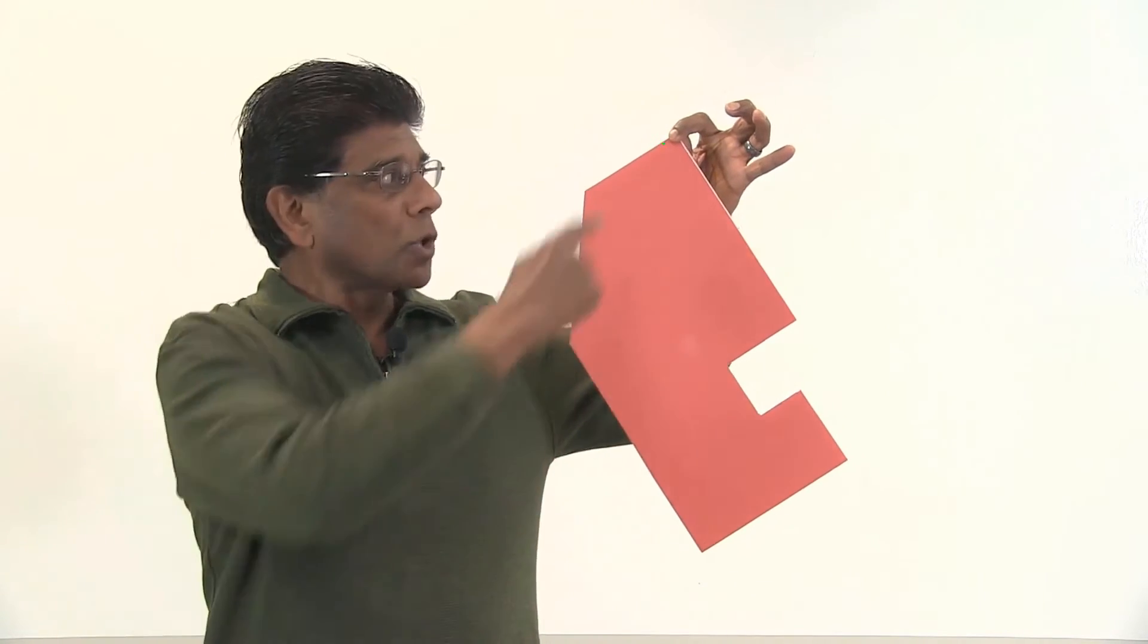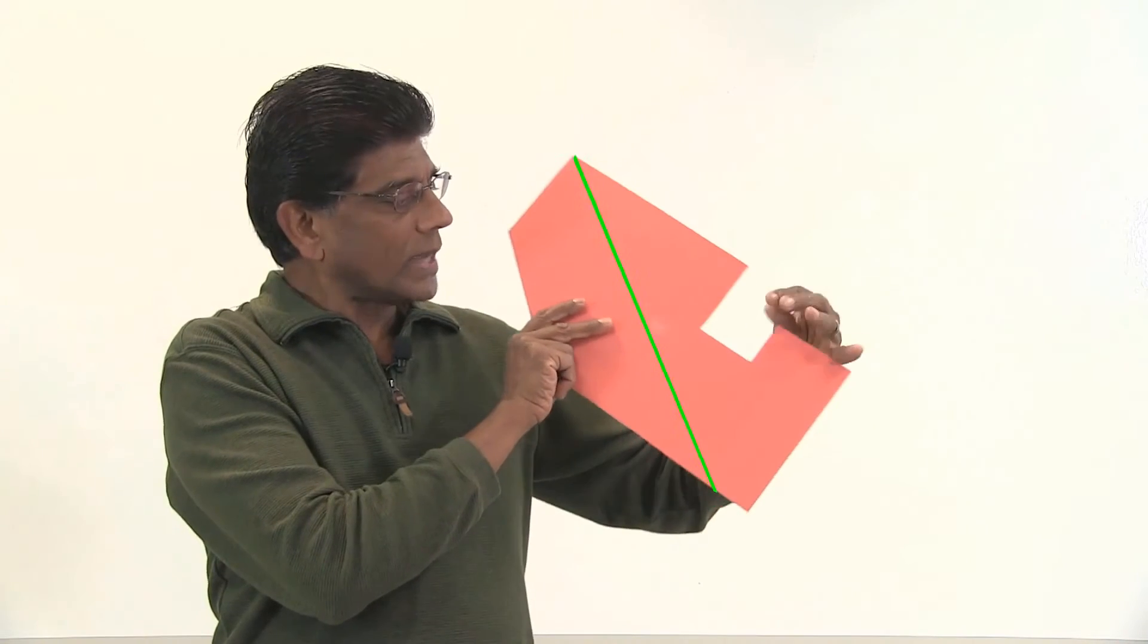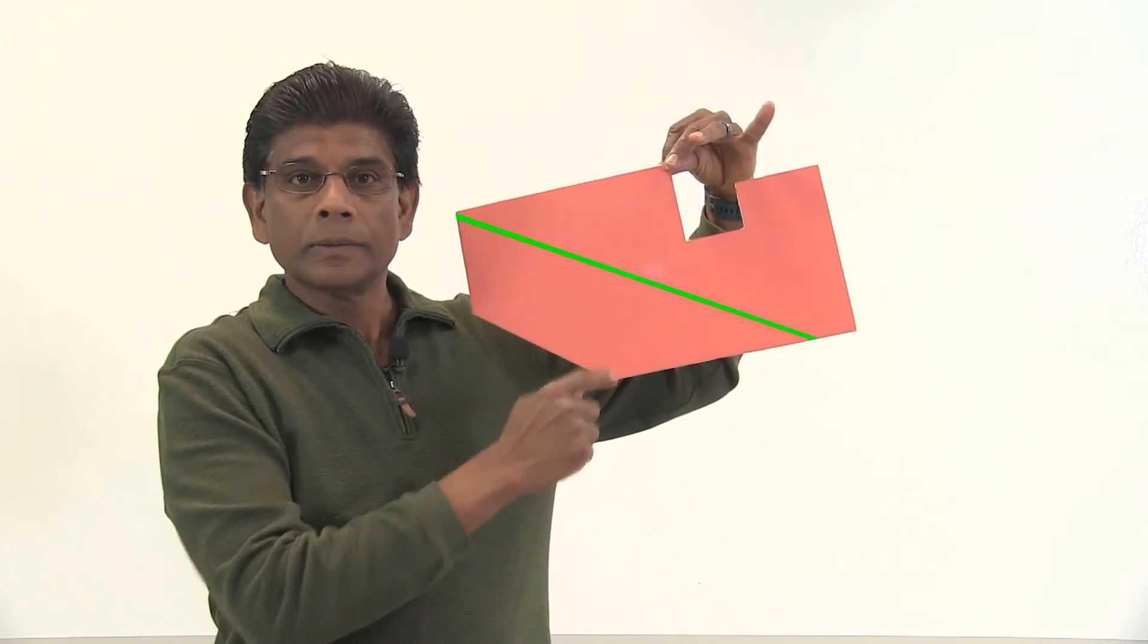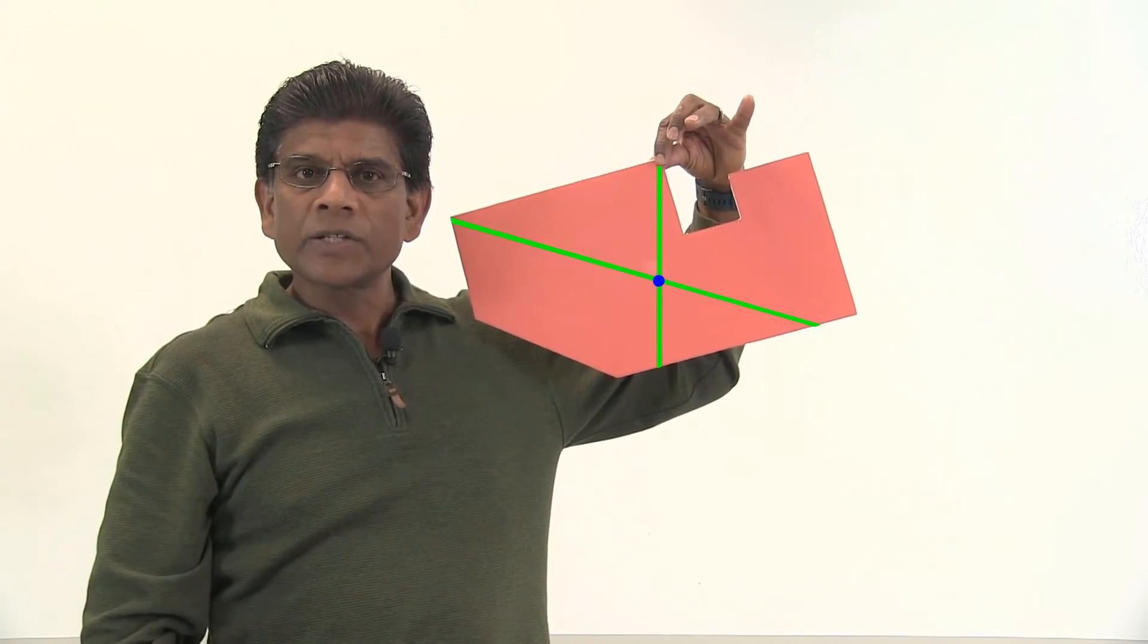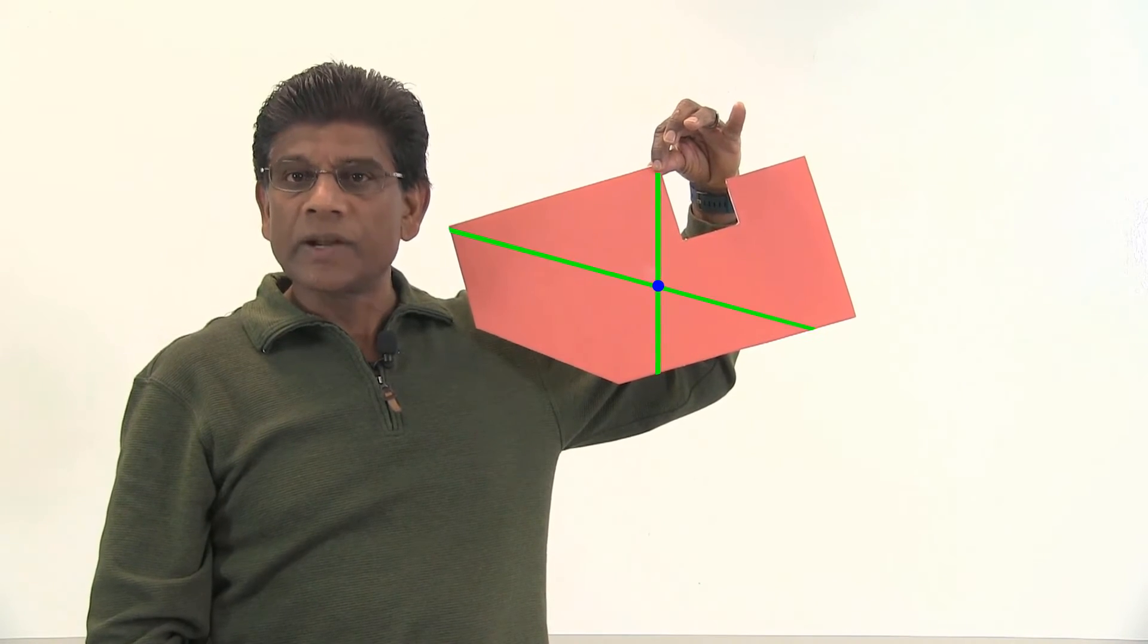I am going to suspend the shape from this point. Let me draw a line. Now do the same thing with the second point. The intersection of the two lines is the center of gravity.